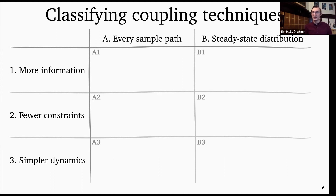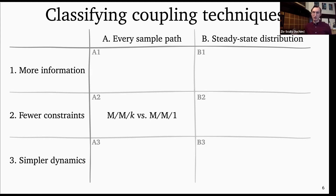The M/M/K example is type A2 because the M/M/K can be thought of as like an M/M/1 but where you're constrained to only serve at capacity the number of servers you have over K when you have few enough jobs. We're going to talk more about viewing K-server queues as a constrained version of single-server queues on day two tomorrow.